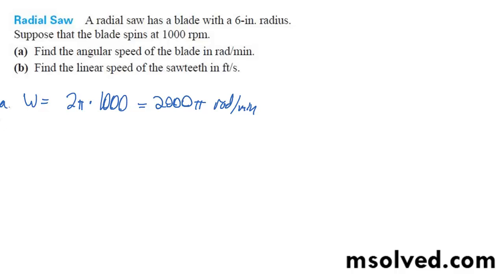Alright, so part B, we want to find the linear speed. That's simply V equals R times W, which is going to be equal to our 6 inch radius. They want feet per second, so we're going to do one half, so it's basically 6 over 12, 6 inches in a foot, one half times 2,000 pi.